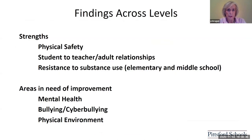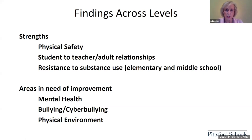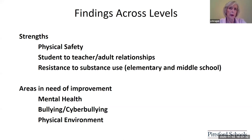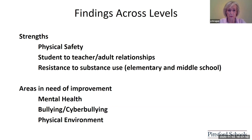Our overall findings across the levels — fifth through twelfth — show the areas of strength. The superintendent asked the IAC to identify areas of strength and areas needing improvement, along with any suggestions. Areas of strength across the district fifth through twelfth include physical safety and student-to-teacher and adult relationships. That's significant in terms of looking at how we might address the areas that came up as less favorable. There is resistance to substance use among elementary and middle school students, though we'll find that's not the same for high school students.